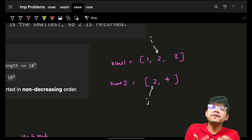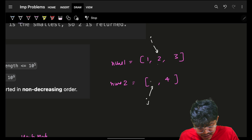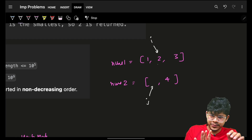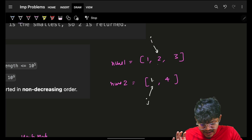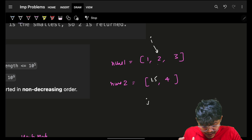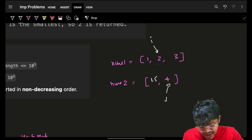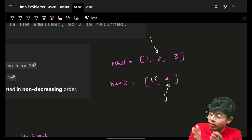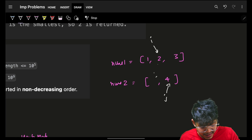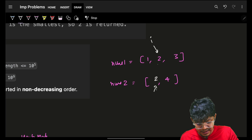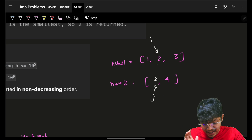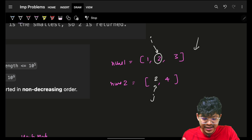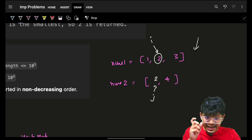If both pointers point to the same value, we stop and that's our answer. If we imagine a value like 1.5 between 1 and 2 — since it's always integers, this is hypothetical — J would have moved instead. We keep moving whichever pointer is smaller until we find a match. In our example, we find 2 and 2 matched, so that's the answer. We return nums1[i] when matched.